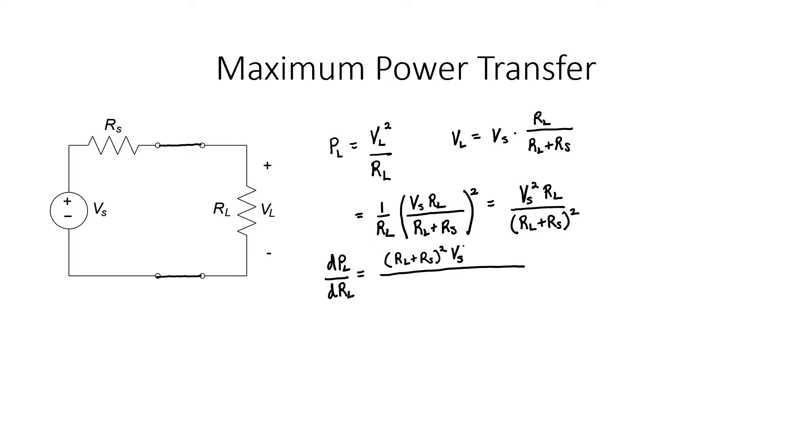To take the derivative of this fraction here, in the numerator, we're going to take the bottom times derivative of the top minus the top times derivative of the bottom. And then in the denominator, it'll be the bottom squared. We can cancel out one term of RL plus Rs from the numerator.